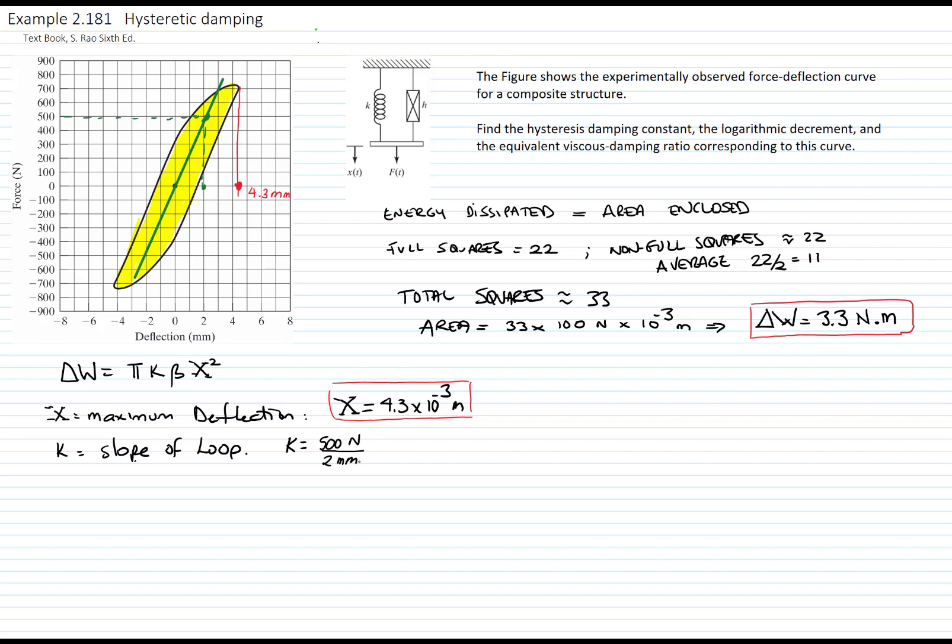So my slope is 500 newtons over 2 millimeters, which is the same as 500 newtons divided by 2 times 10 to the negative 3, which is 2.5 times 10 to the 5 newtons per meter.